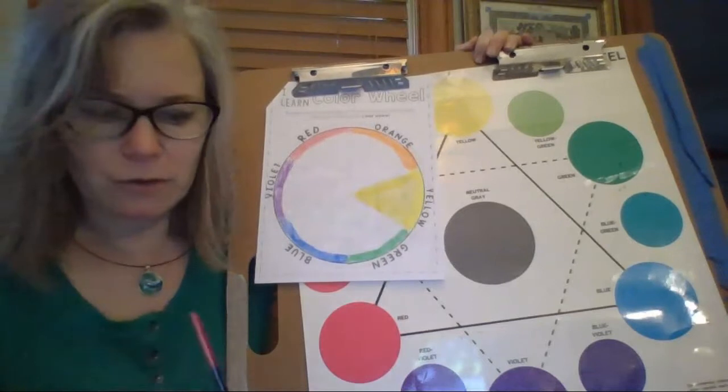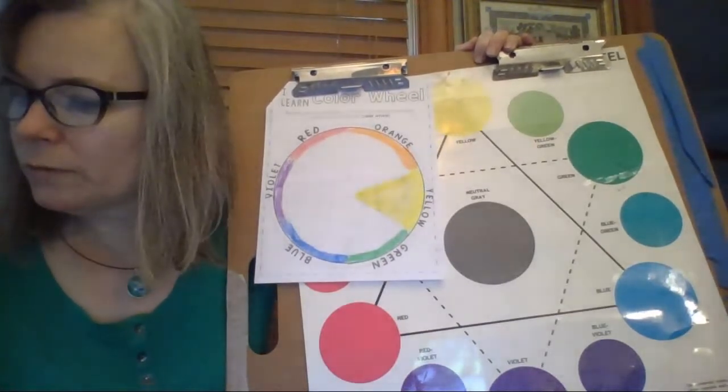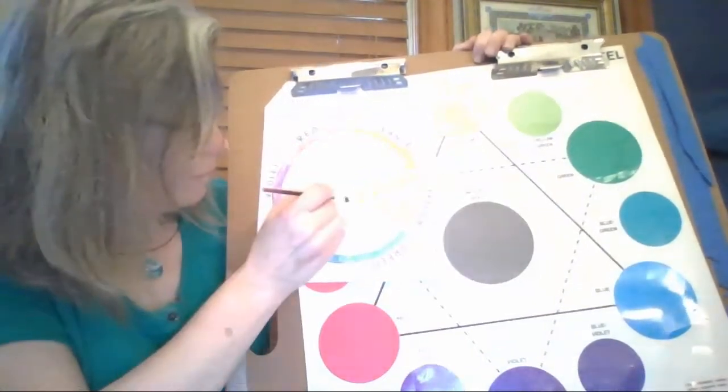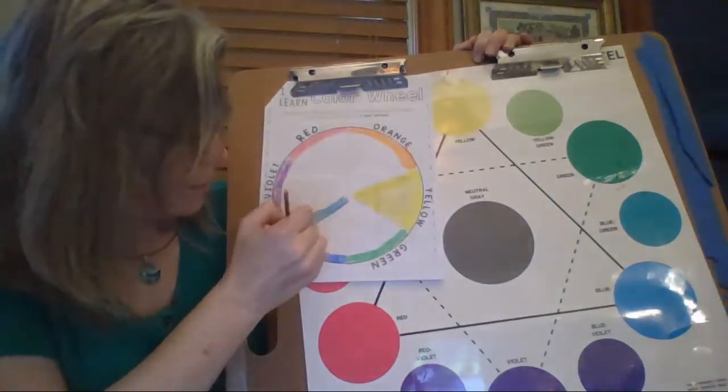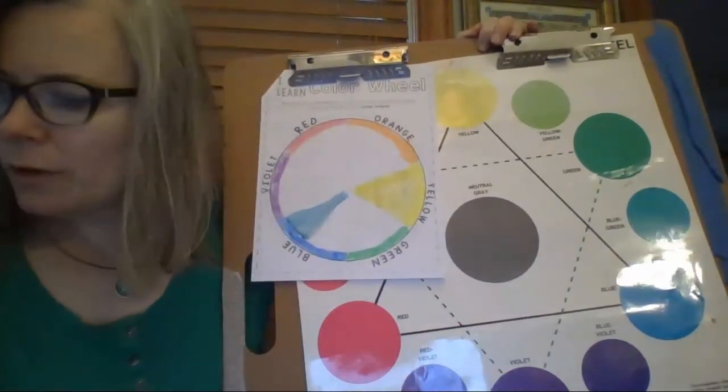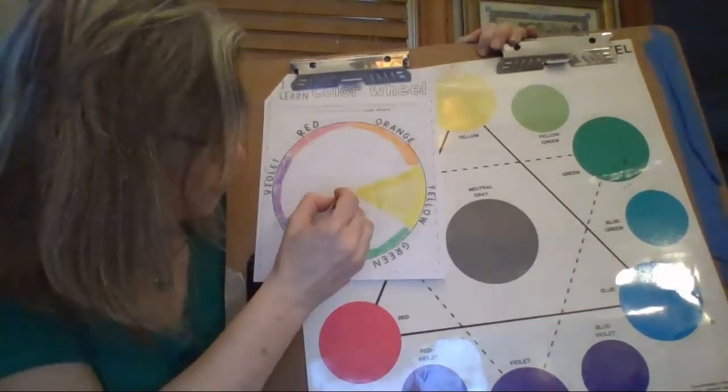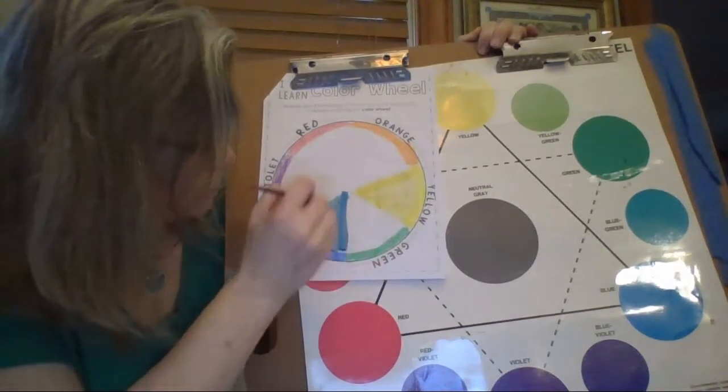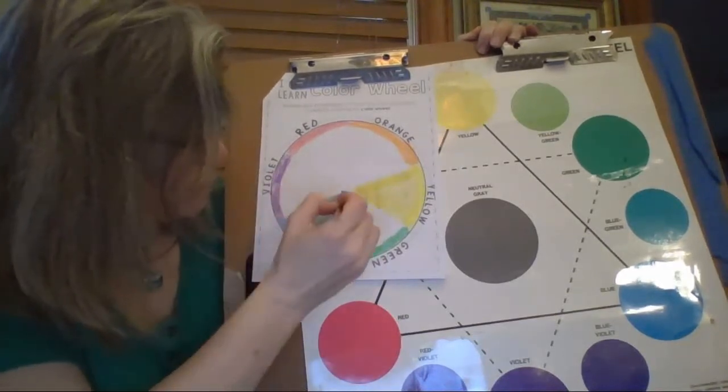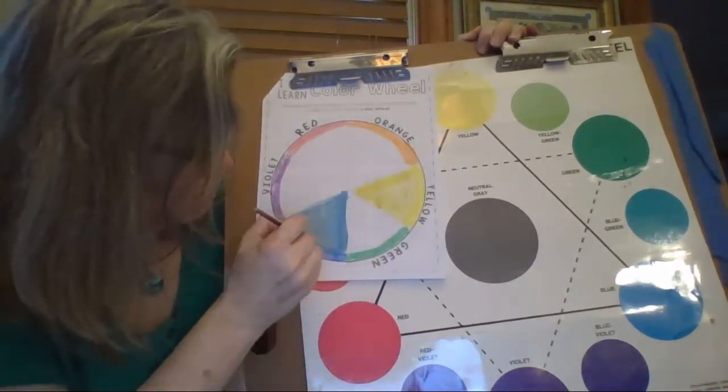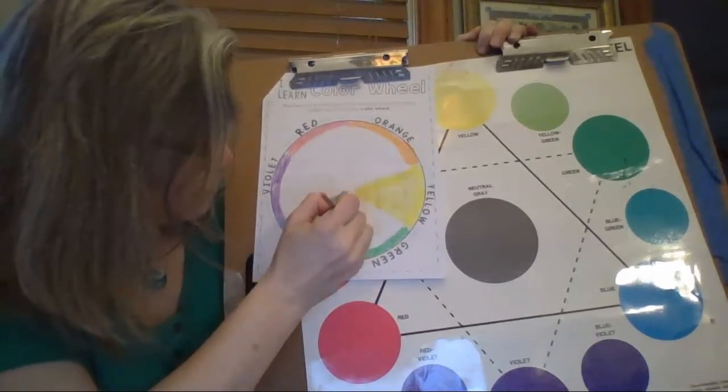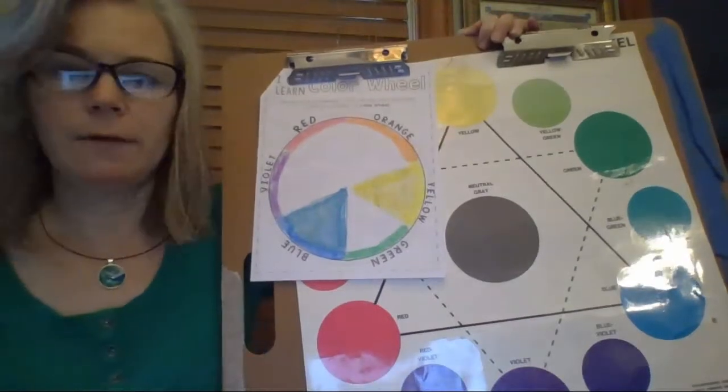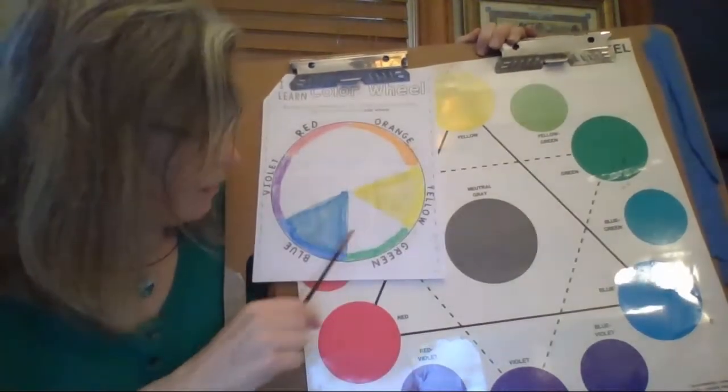So the next color I'm going to do is blue. And I'm going to fill in this little pie slice here with my blue. It's not a square, sort of almost a triangle shape. It's like it's curved on one side. We'll call it a pie slice. So I've got yellow and I've got blue.